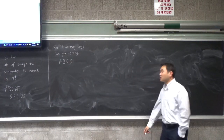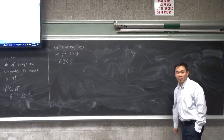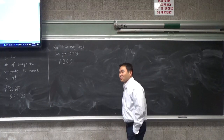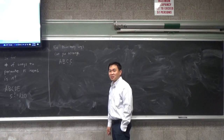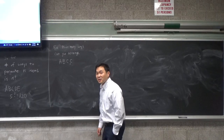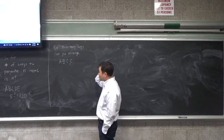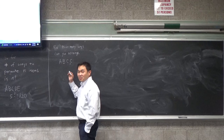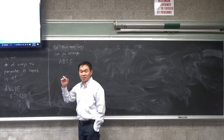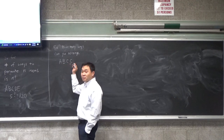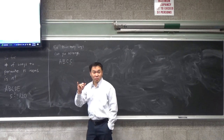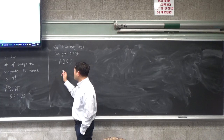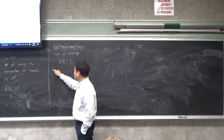Let's think about this question. Some of you already know the answer. Three factorial? No, not quite. Twenty-four? Four factorial? Well, if these were different, it would be four factorial. So let's think about the following solution.